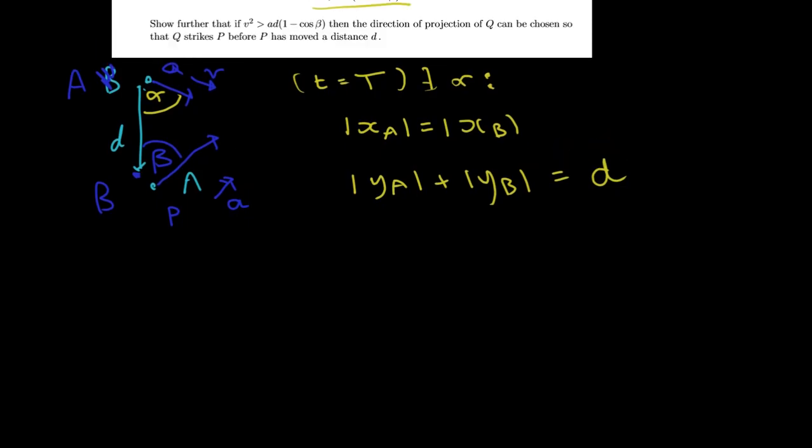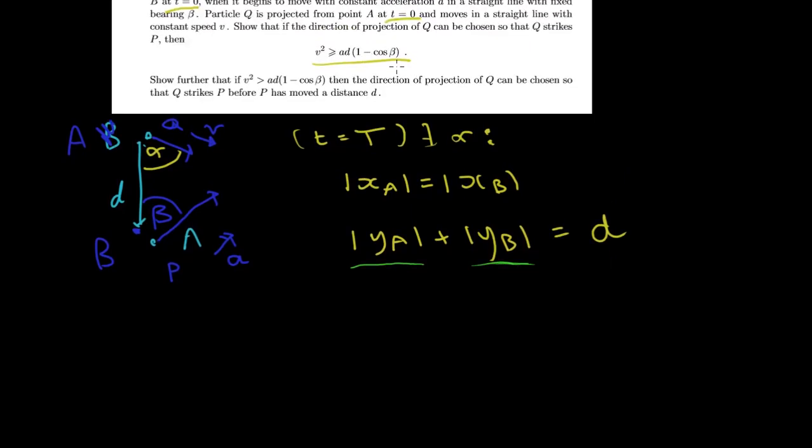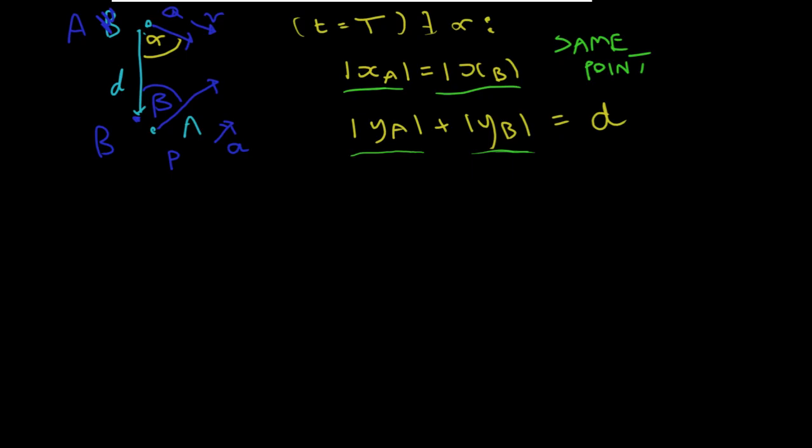So at some point T, the distance traveled by particle A plus the distance traveled vertically by particle B must equal the distance that they're apart at start. If there's a collision, and also the horizontal distance traveled must be equal, i.e. they're at the same point. So at the same time, they're at the same point. That's what a collision is. So let me just write that out.